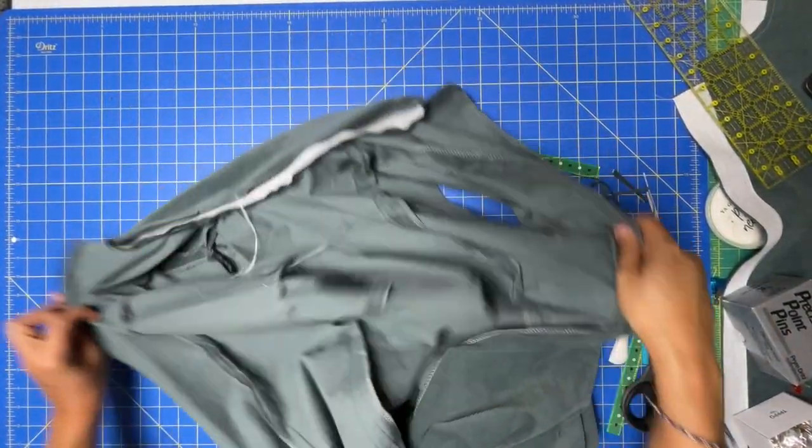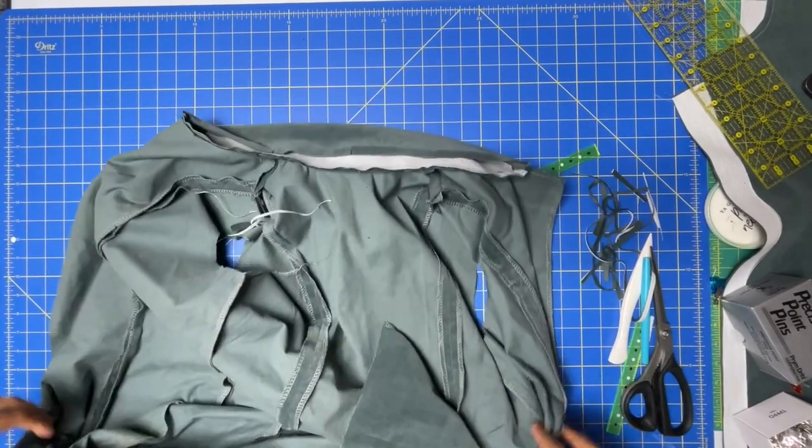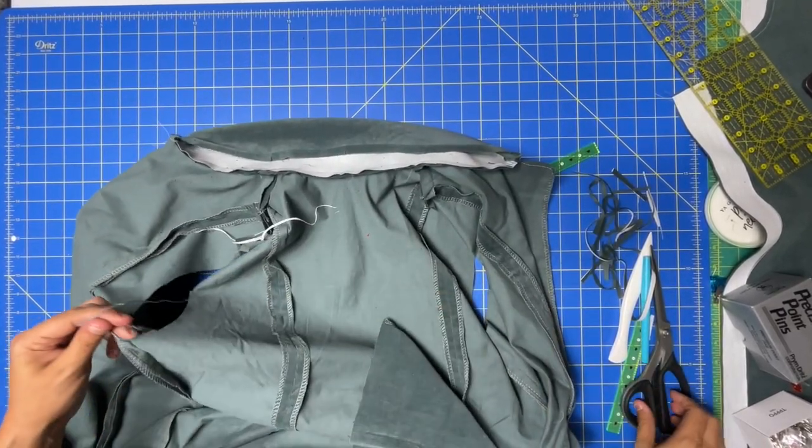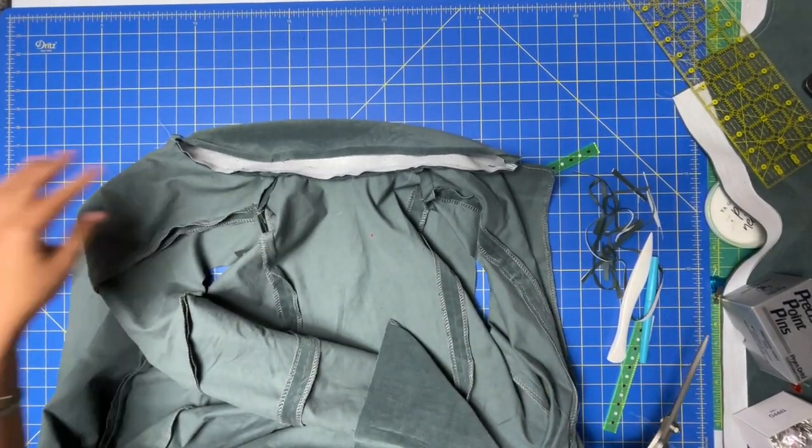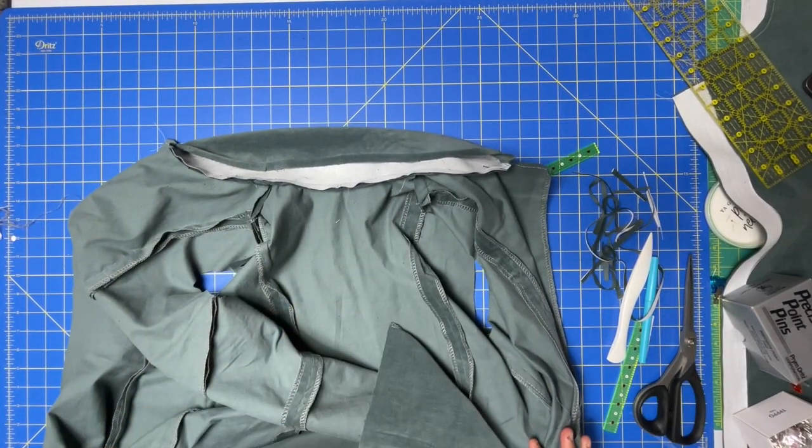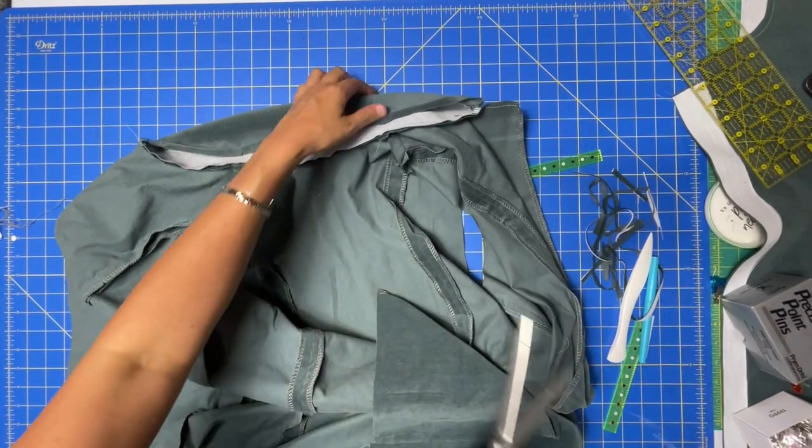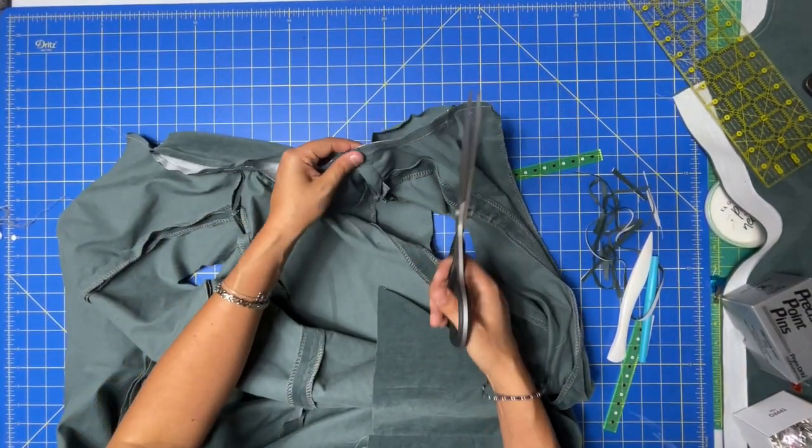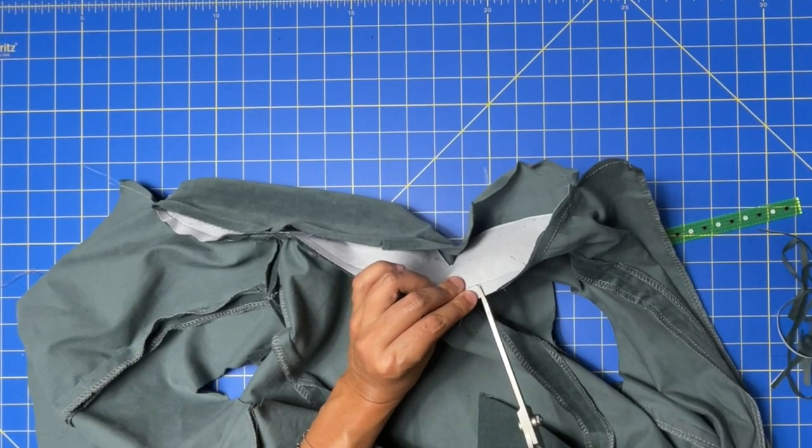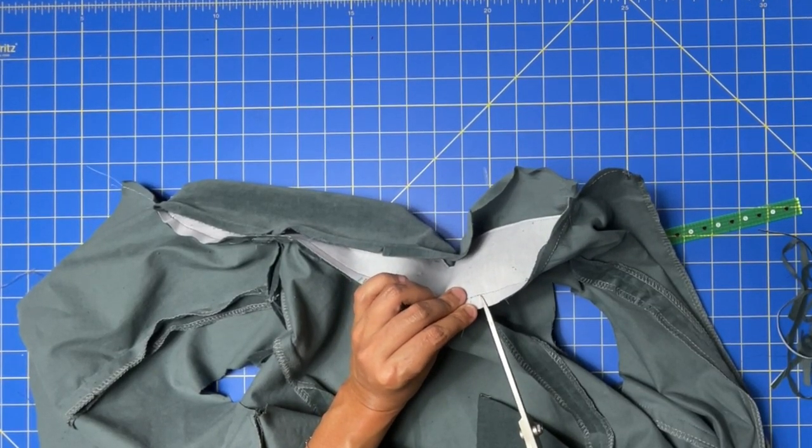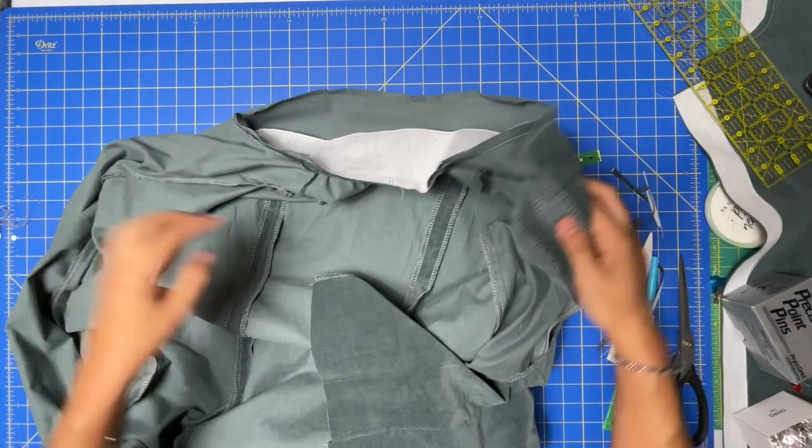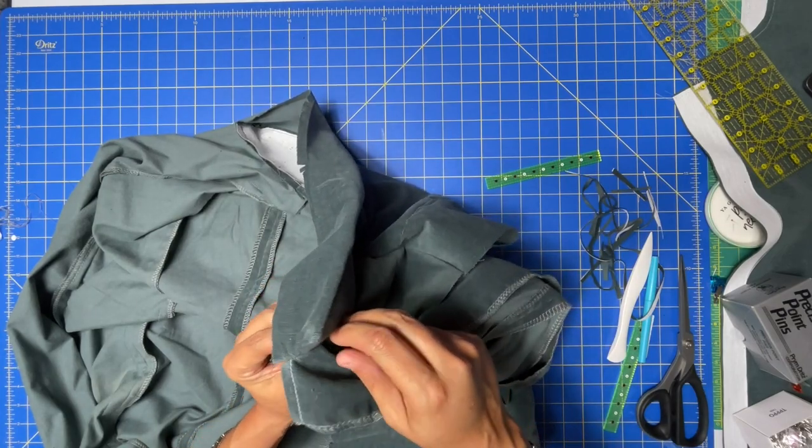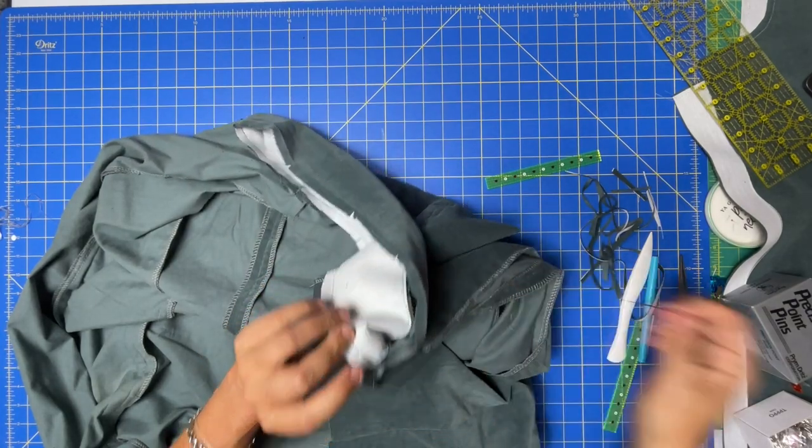The next step for the collar is at the dots, aka the shoulder seams. We are going to trim up to the seam line but not through it. You're going to be super careful—you can get extra sharp scissors that are super sharp to the point—but just through the collar piece. Now we are going to trim and grade this seam as well.